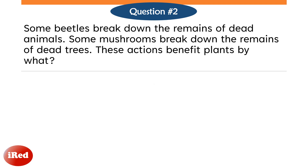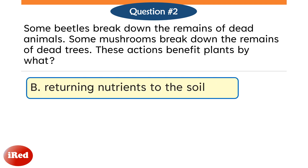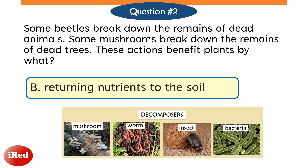The correct answer is Letter B, returning nutrients to the soil. Organisms such as worms, insects, bacteria, and fungi like mushrooms, that break down the remains of dead animals and plants, are known as decomposers. Decomposers recycle dead animals and plants into nutrients that are released back into the soil. Plants need these nutrients, such as carbon, nitrogen, and phosphorus, to grow.